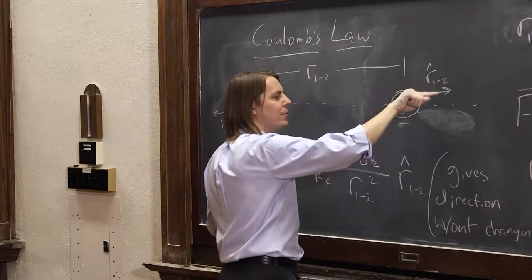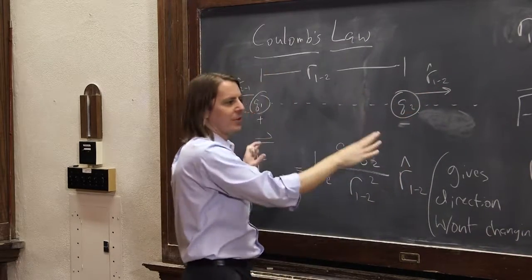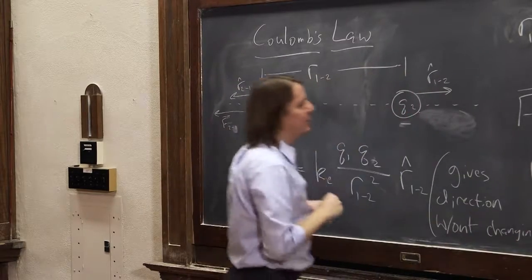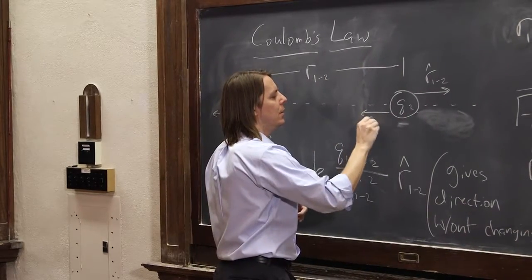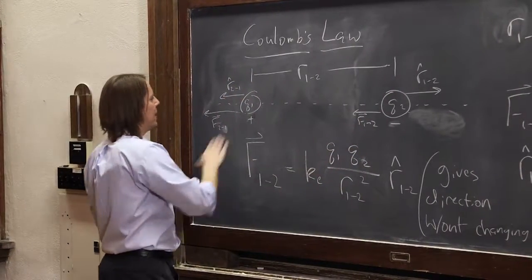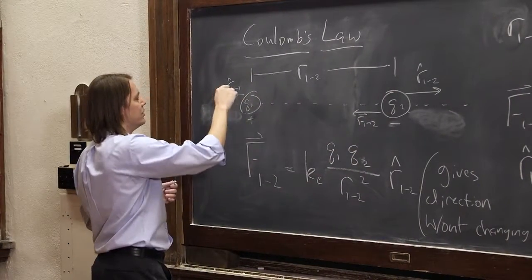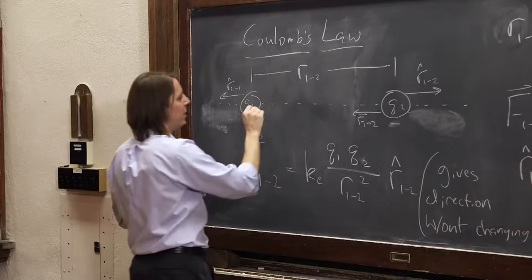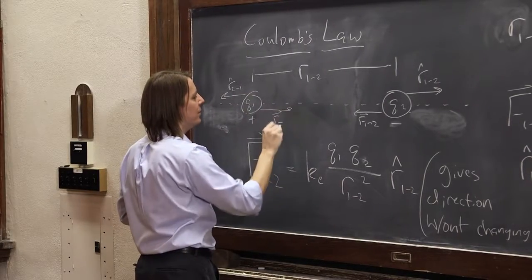So 1,2, the unit vector, is still that way. The unit vector doesn't care about the charges. It's just defined by the geometry. But then F1,2 would be the opposite direction because of the negative magnitude. And here would be the same thing. The unit vector 2,1 is still that way, but then the force would be this way if they were opposite charges.